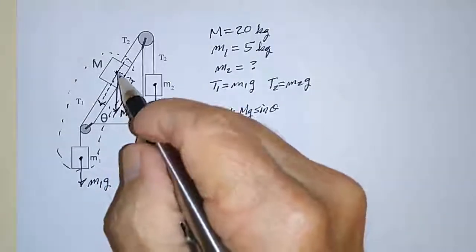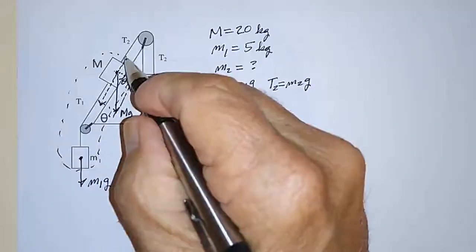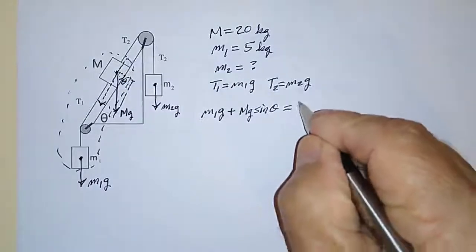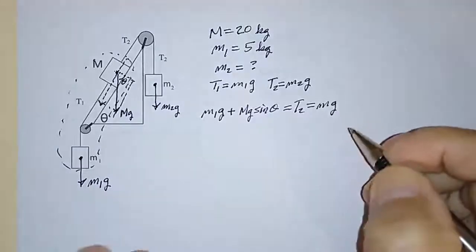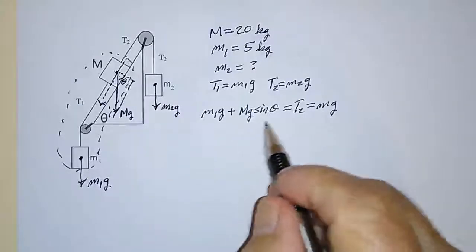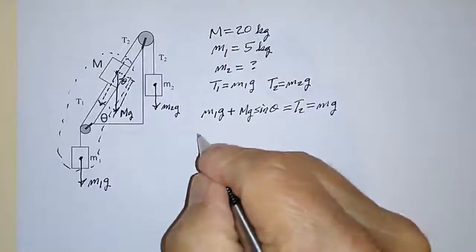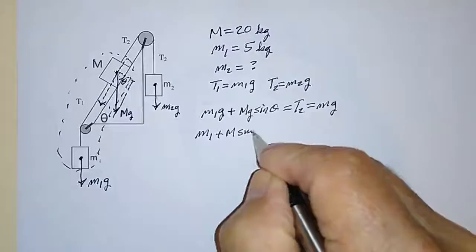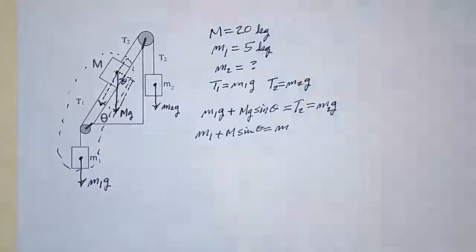Those are the forces that are causing this system to try to go this way. And if it's not going that way, that means that T2 is equal to this. This is equal to T2, and that's equal to M2g. And that's how we get our solution. In other words, I can write this, noting that there's a g in each term, I can write this as M1 plus big M sine theta is equal to M2.